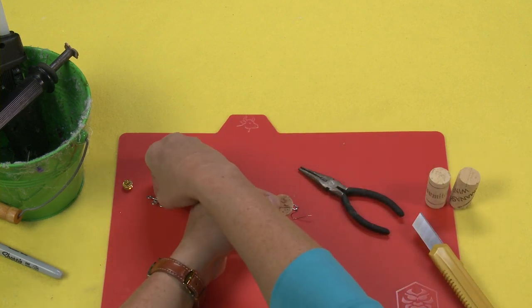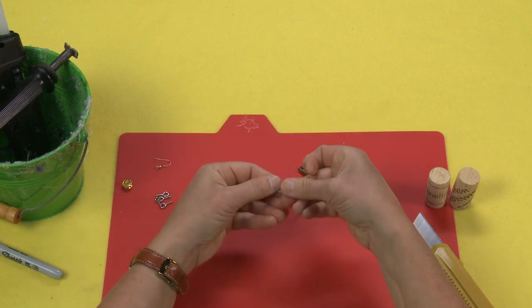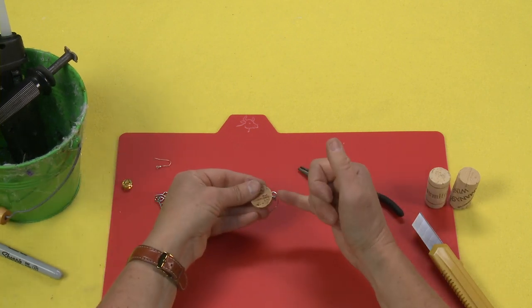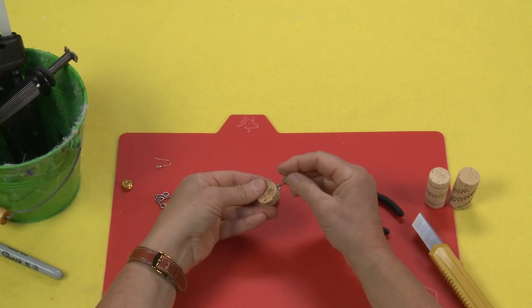Because even if you squeeze, there's still going to be that tiny little gap, but because it's down inside the cork it's not going to pull out.